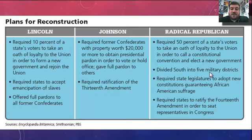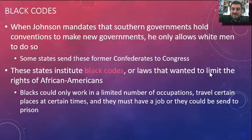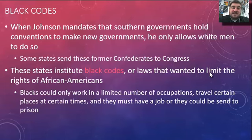There are three plans for Reconstruction: Lincoln's 10% plan, Johnson's moderate plan in between, and the Radical Republicans' harshest plan demanding the South pay for what they did. Johnson mandates that states petitioning to rejoin the Union hold constitutional conventions — but he wants only white men present, with blacks having no say in new southern governments. Some states essentially set up the same government they had before the Civil War and send former Confederate leaders to Congress.